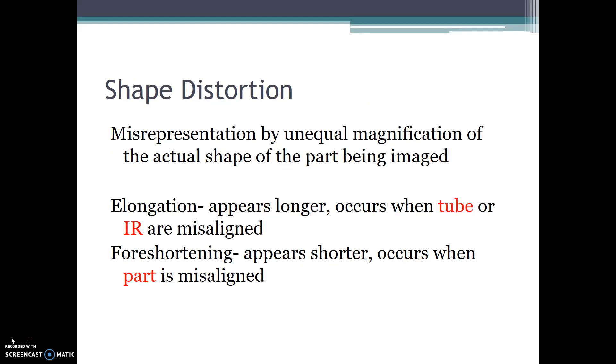Shape distortion is misrepresentation by unequal magnification of the actual shape of the part being imaged. Elongation makes the part appear longer and occurs when the tube or the image receptor are misaligned. Foreshortening makes the part appear shorter and occurs when the part is misaligned.